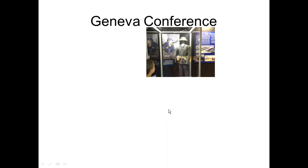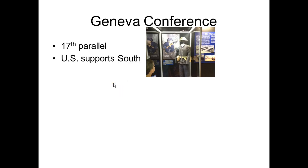The Geneva Conference then took place, and it did a couple of things. It said that Vietnam would be split at the 17th parallel — very similar to how Korea was split. The United States would support the pro-democratic south. We also agreed to SEATO, a mutual defense agreement, though nowhere near as powerful as NATO. The US, France, China, USSR, and Vietnam were all at this meeting.